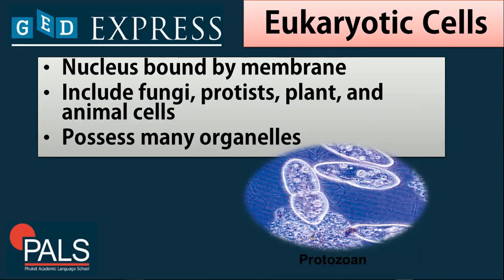We proceed with eukaryotic cells. The majority of animals and plants are eukaryotic, meaning the nucleus is bound by a membrane. This includes fungi, protists, plant, and animal cells. They possess many organelles, which make up the entirety of that cell.